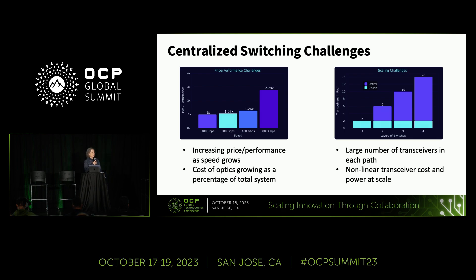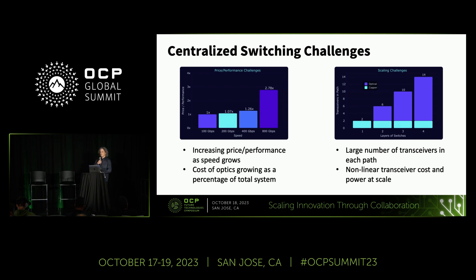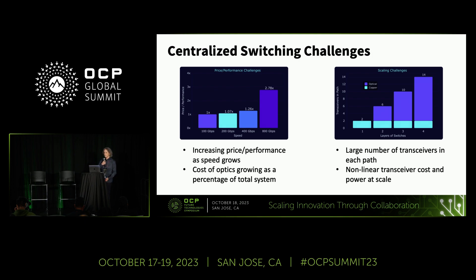On the right-hand graph, as the scale of the system goes up, you require more layers of switches — a single switch at small scale, two layers at medium scale, and three or even four layers at large scale. If you count the number of transceivers in the path from any endpoint to any other endpoint — add two to all those numbers — it can be up to 16 transceivers for one communication between two endpoints. As you get to higher scale, you get this nonlinear effect where you pay for more transceivers for the same capability, making it challenging for high-performance applications.